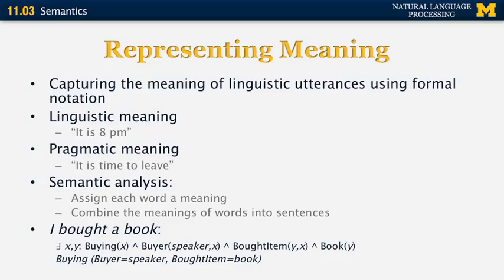Another representation of the same sentence may be a record that consists of a predicate — 'buying' — and then two attribute-value pairs for its arguments: a buyer, who is the speaker of the sentence, and a bought item, that is the book.